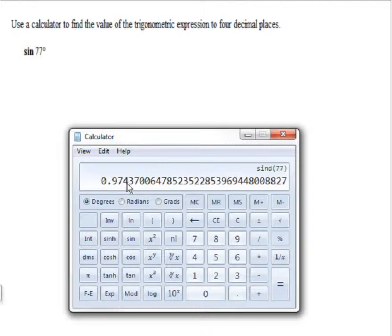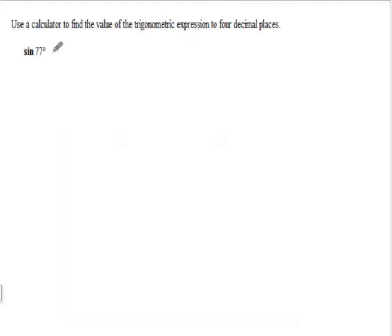So, 0.9744. So, the sine of 77° is approximately 0.9744. And that's all there is to using a calculator to find the value of the sine.